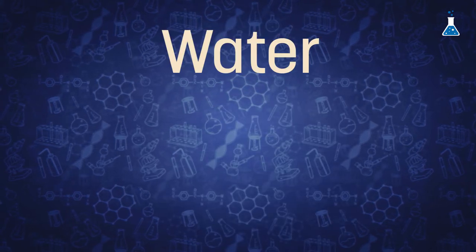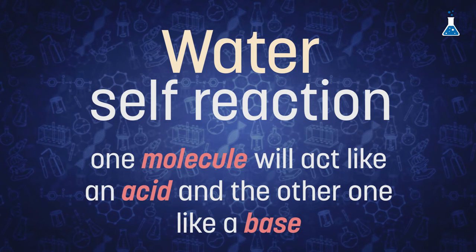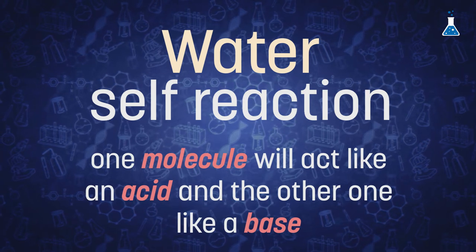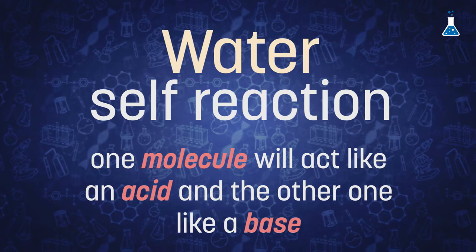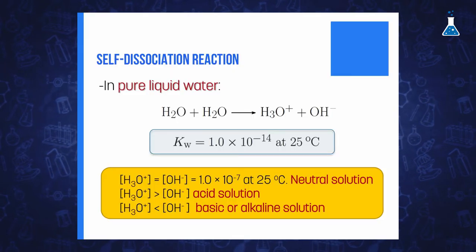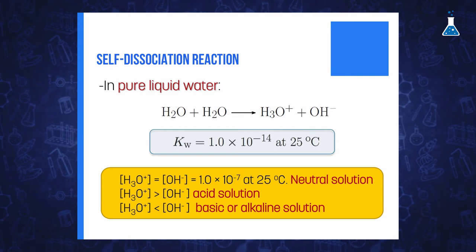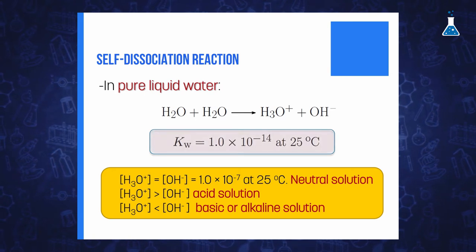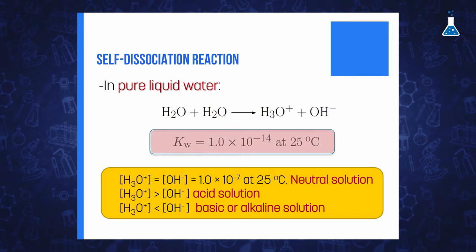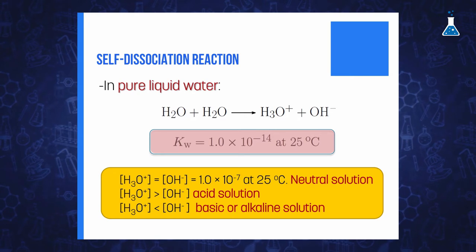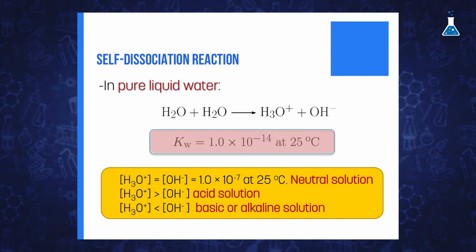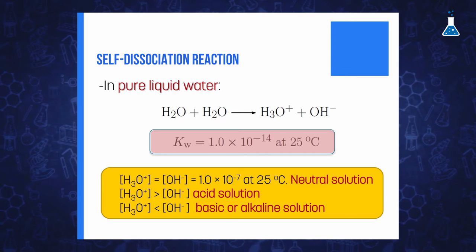The ability of a substance to act as both a base and an acid, as we have seen with water, is defined as amphiprotic behavior. So water can react with itself: one molecule acts like an acid and the other like a base, to form oxydanium and hydroxide ions. The extent of this reaction, known as the self-dissociation reaction, is very minimal, and the equilibrium constant for this particular reaction has the special symbol Kw, named the ion product constant, with a value of 1×10⁻¹⁴ at 25°C.